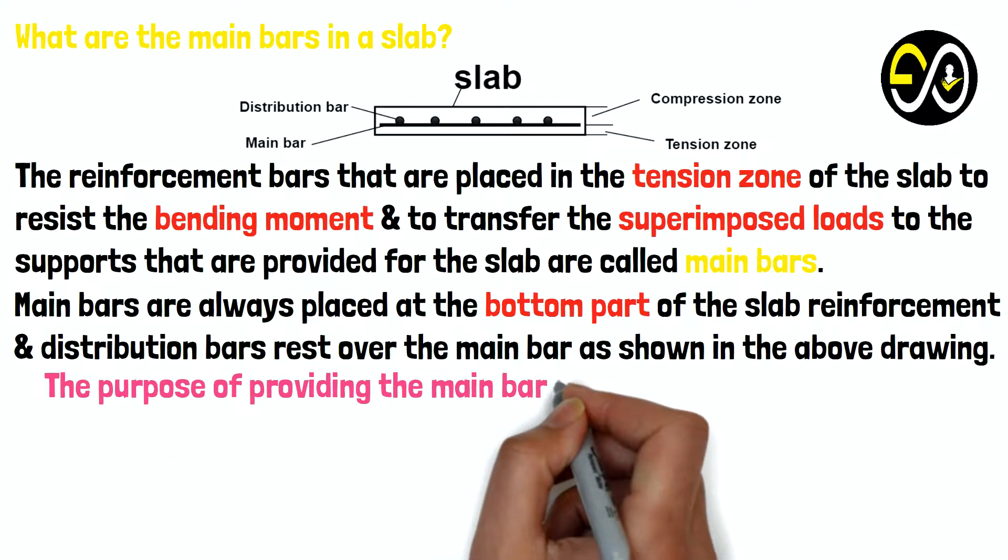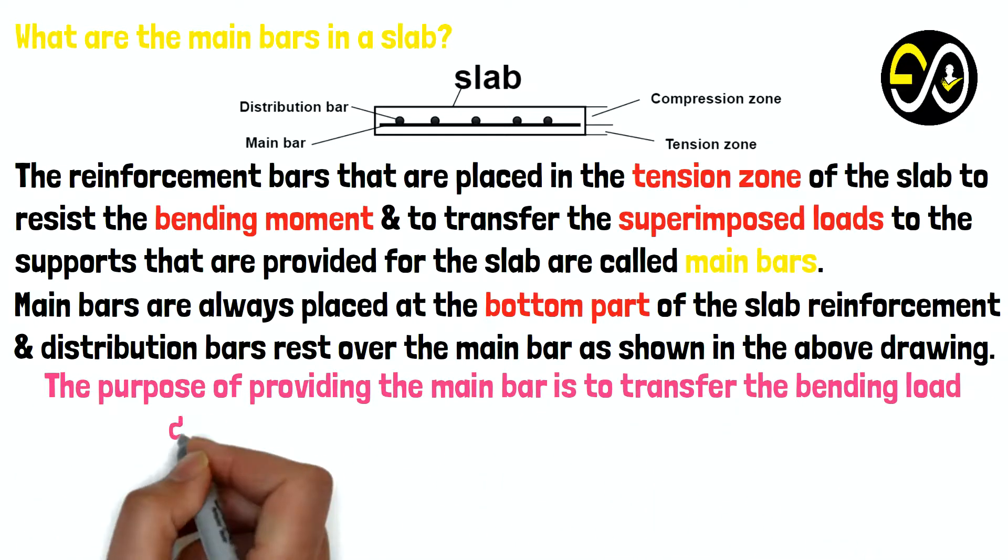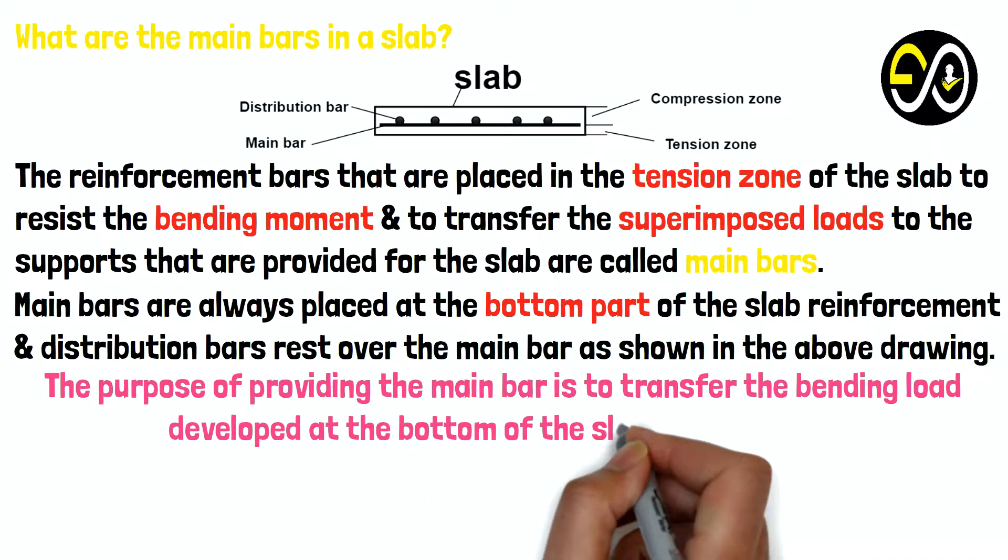The purpose of providing the main bar is to transfer the bending load developed at the bottom of the slab to the beams.